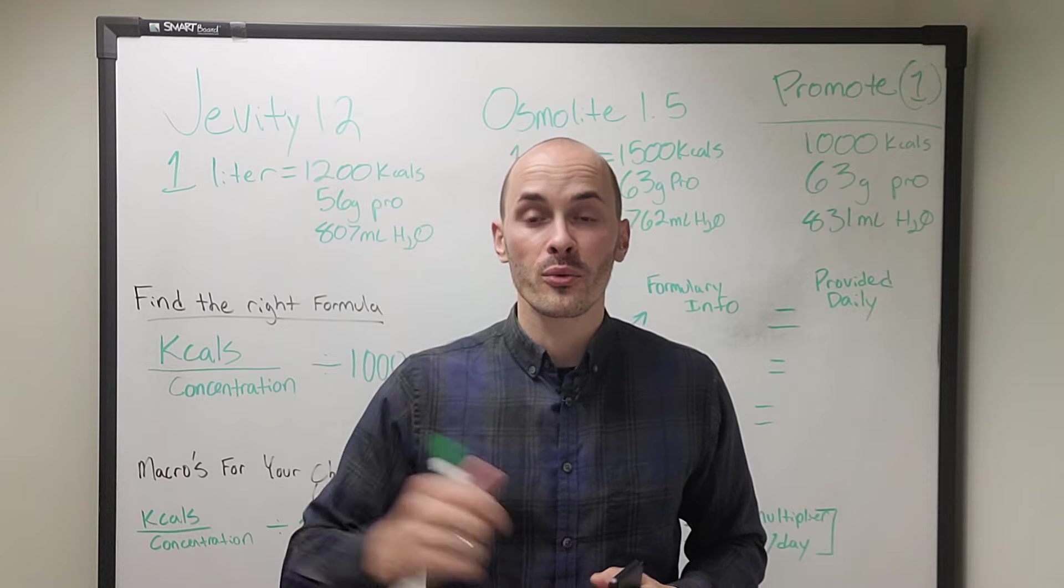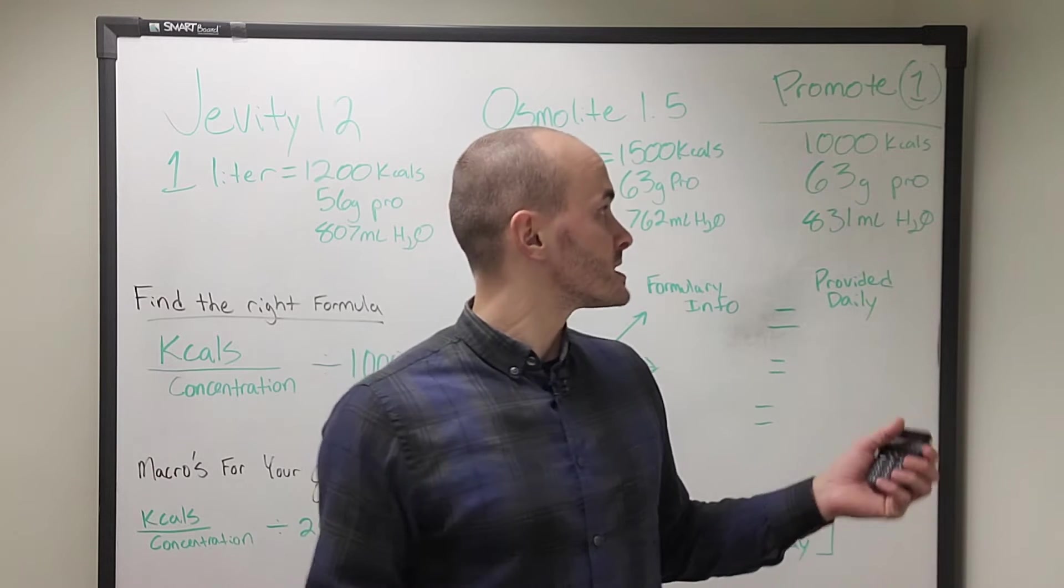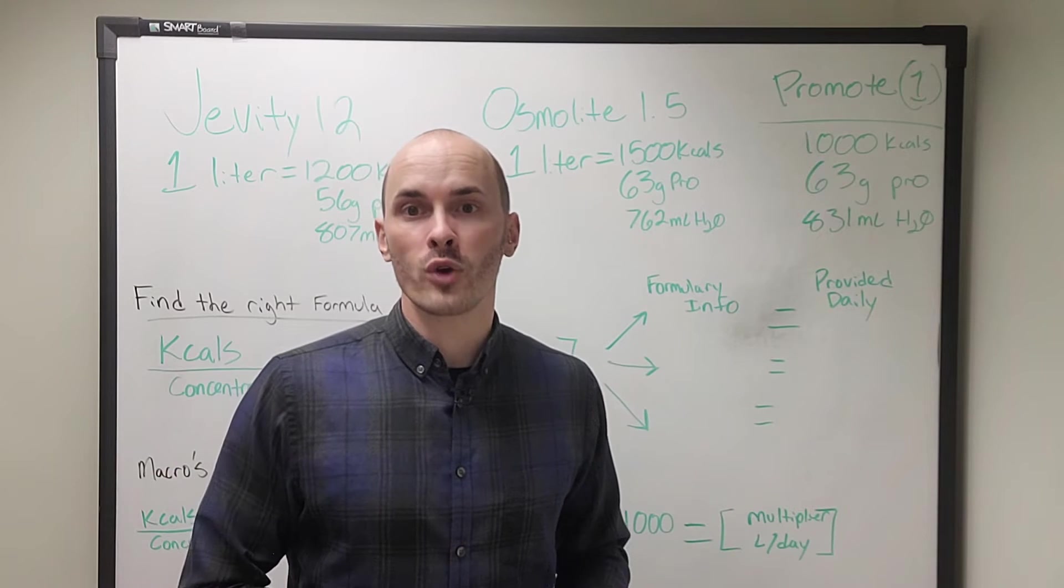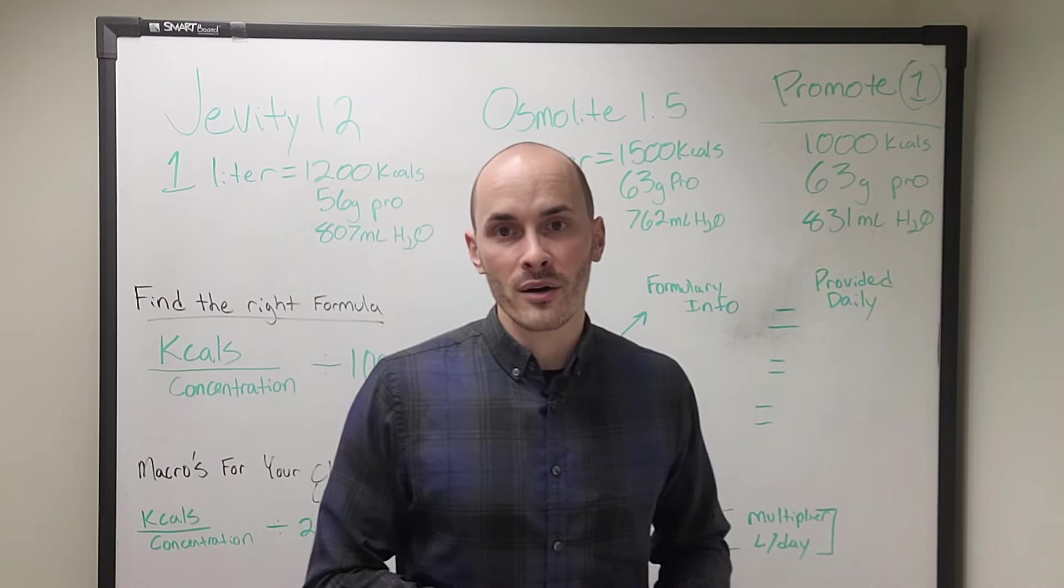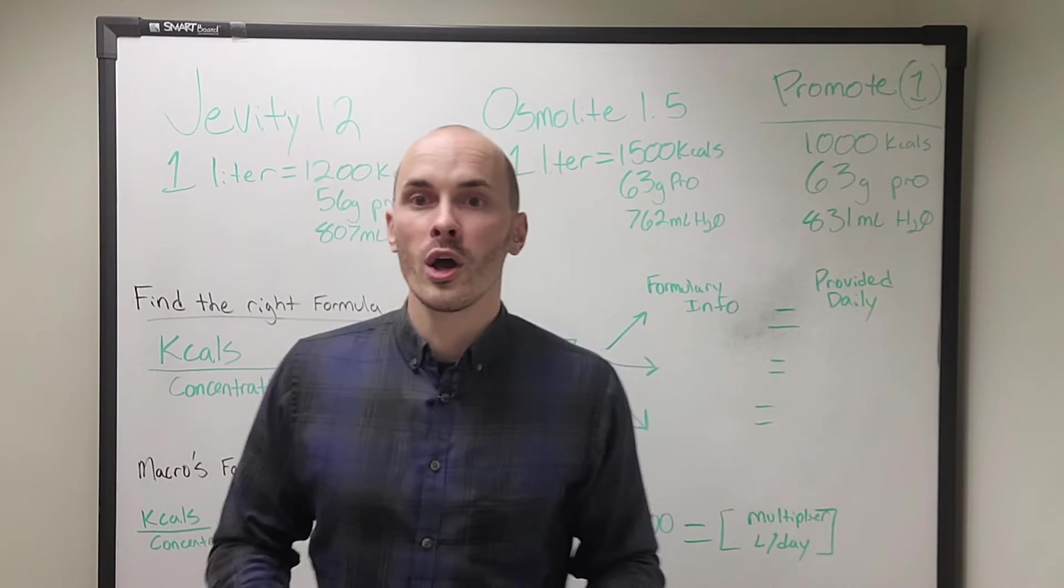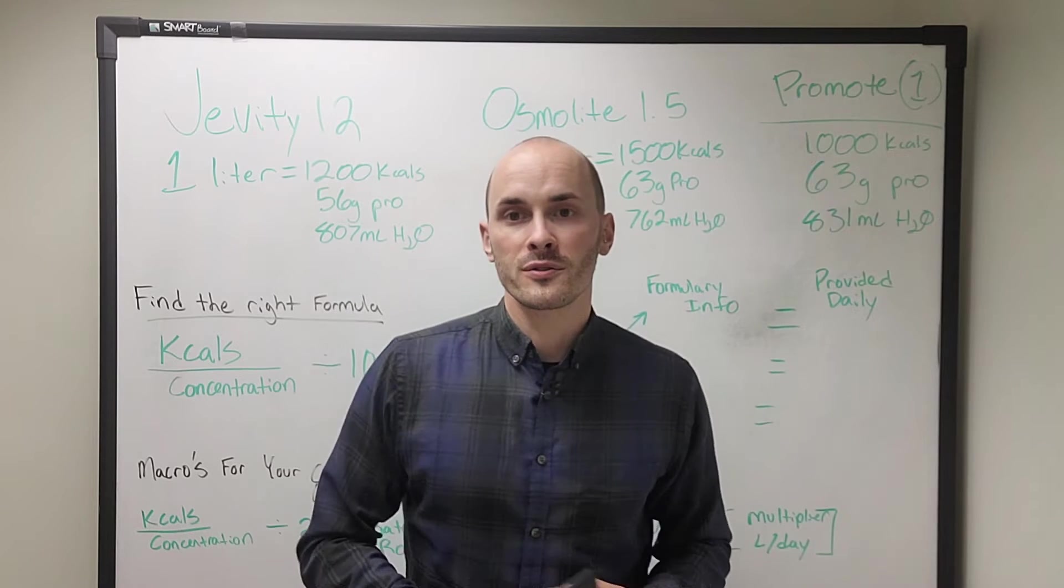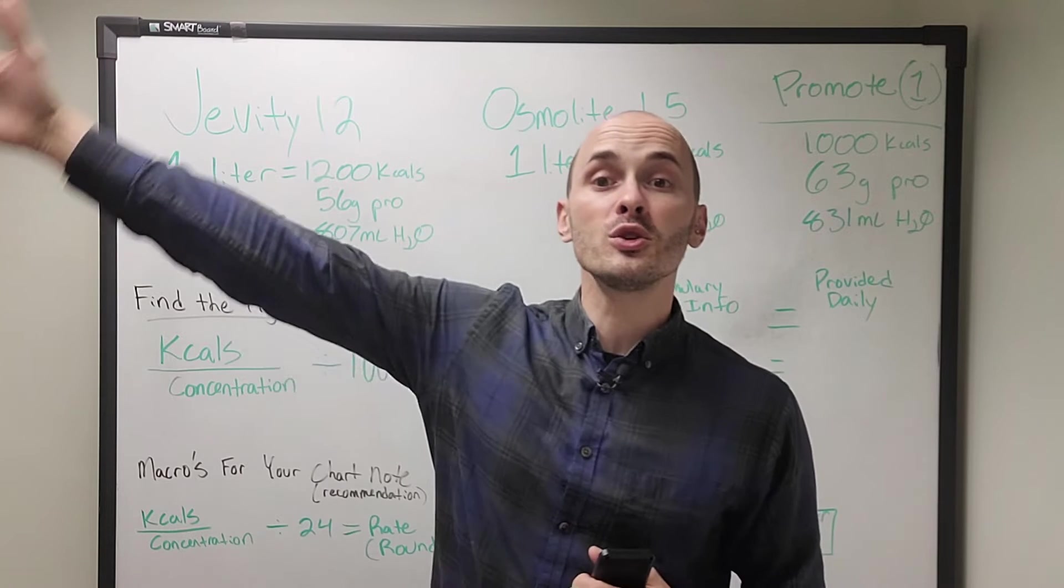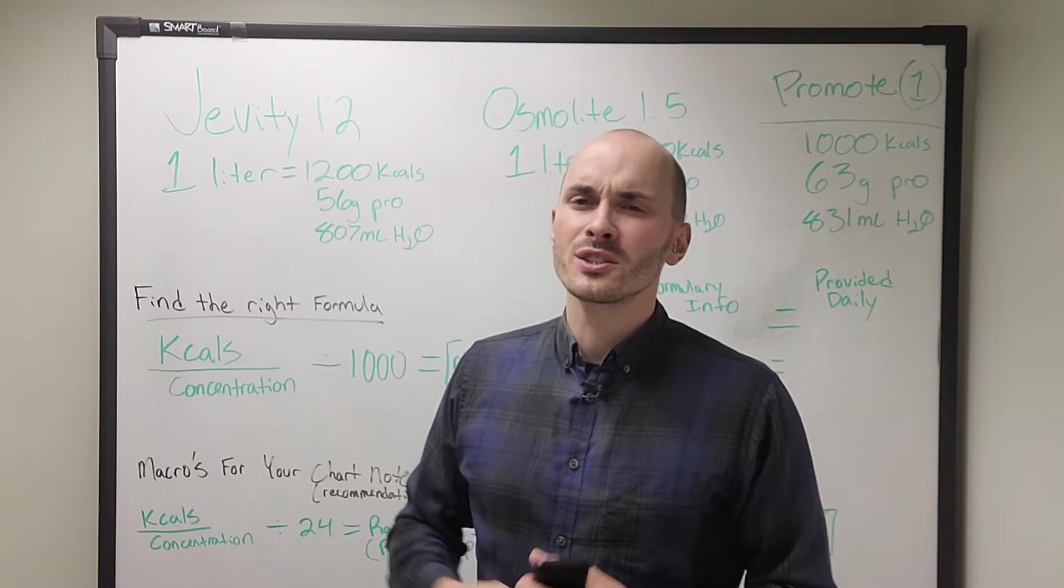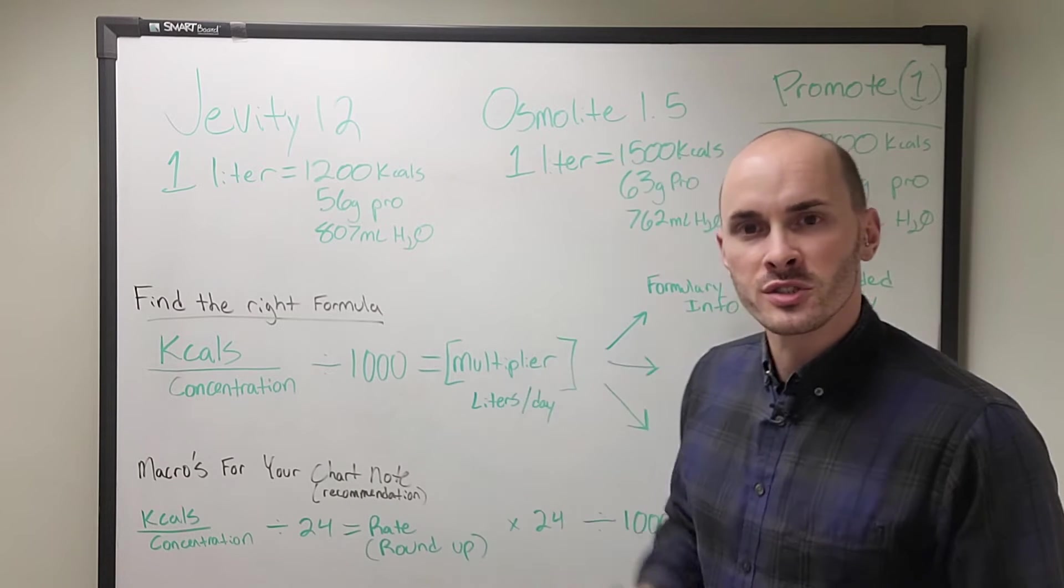Here you're getting more protein per liter than either of these other formulas for less calories. A thousand calories gives you 63 grams of protein. So for someone that needs, let's say, let's make the math easy on us. They need 125 grams of protein and 2,000 calories a day, then they'll be able to meet it with promote. Whereas with Osmolite and Jevity, you would have to give them way too many calories just to meet their protein needs.